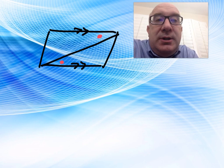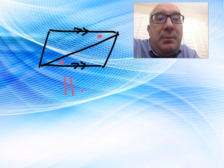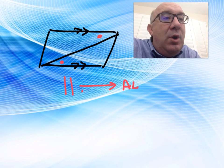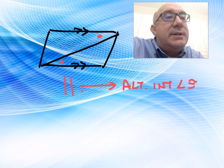One thing I wanted to mention is typically the way I write it is: parallel lines imply alternate interior angles are congruent. This is kind of how I do it.